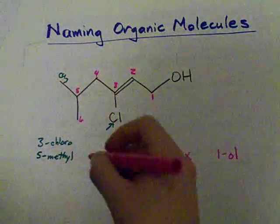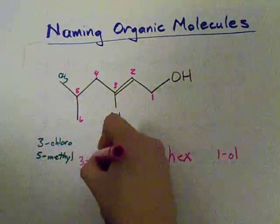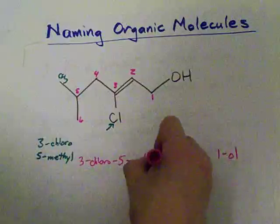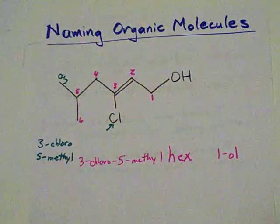Chloro comes before methyl in the alphabet. So, this molecule is a 3-chloro-5-methyl-hex something. 1-ol.